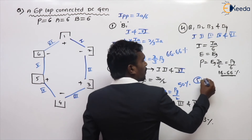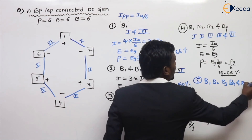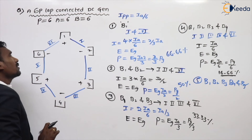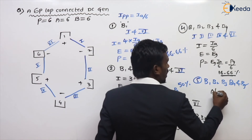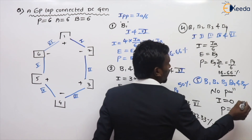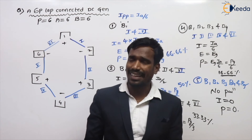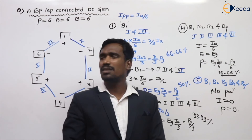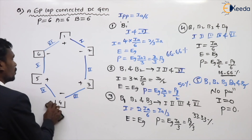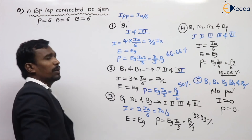Fifth case for six-pole: brush 1, brush 2, brush 3, brush 4, and brush 5 all damaged. Then no parallel path is active — current is zero. If current is zero, the power developed is zero. This completes the analysis for the six-pole machine.